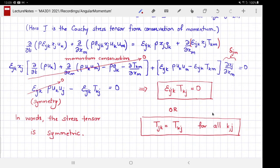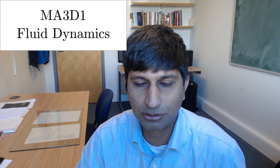This is one of the problems in your example sheet to prove this, but it is really not that complicated. You can simply enumerate all possibilities and get to this answer. In words, the result is that the Cauchy stress tensor—from now on I'm just going to call it the stress tensor—is symmetric in its components. It's a second rank tensor which satisfies this equality. This is an important result we are going to use throughout this module.